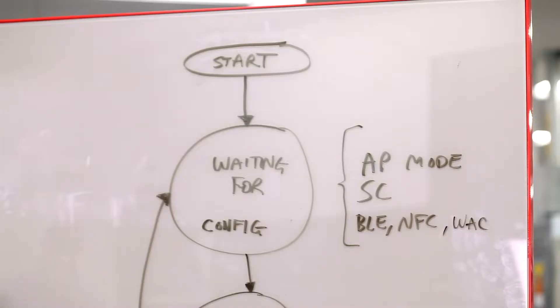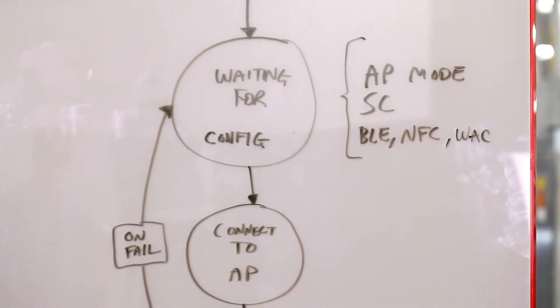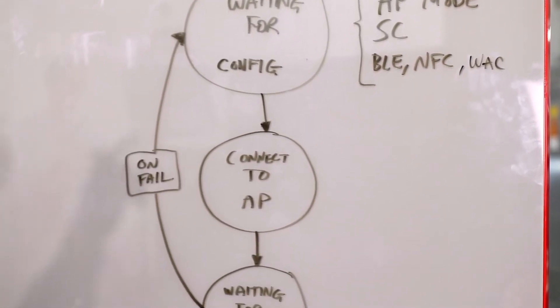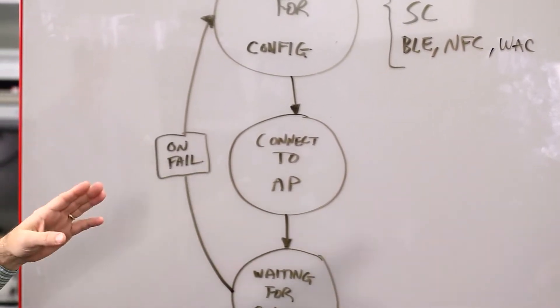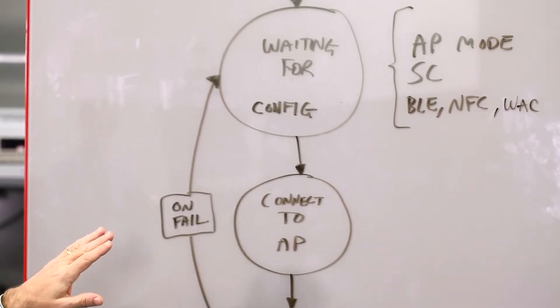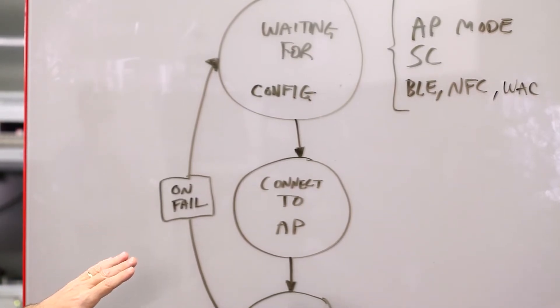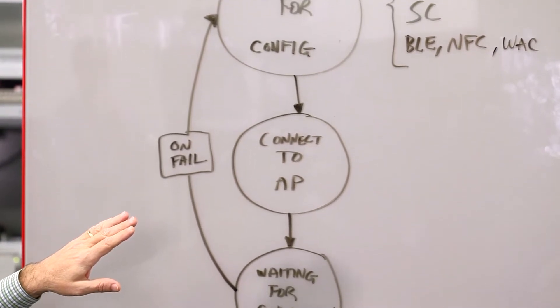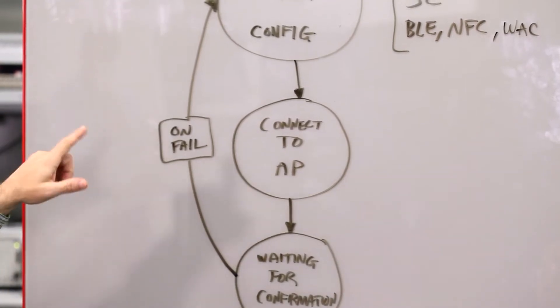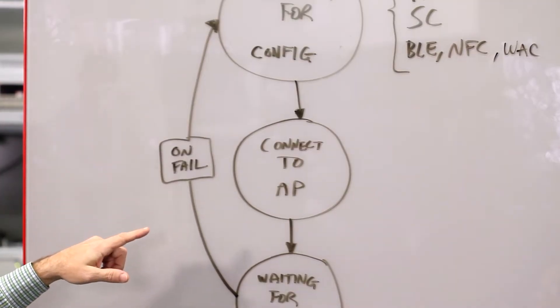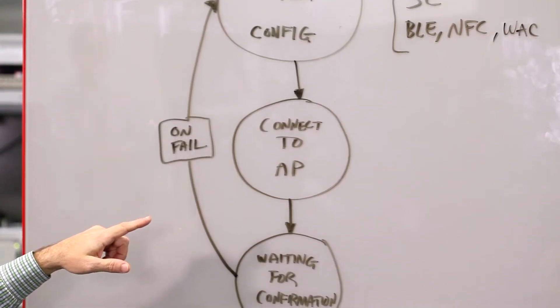Can you walk us through the process of provisioning, maybe like a flowchart of how it works? Sure. So right here on the board — we start the provisioning process, so the host would kick that off and then block any other commands coming to the SimpleLink Wi-Fi device so it doesn't get interrupted, because this is a critical point in the lifecycle of the product once it's installed or being commissioned out in the field. Once the host kicks that off, it's waiting for the configuration — and that configuration can come in access point mode, SmartConfig, or over another radio technology like BLE, NFC, or the wireless accessory configuration like what is seen in HomeKit applications. Once it gets that configuration information — the SSID and the password in the most basic form — it would then turn around and connect to the access point of the network that it ultimately needs to be connected to.